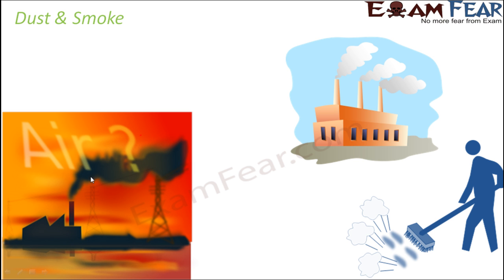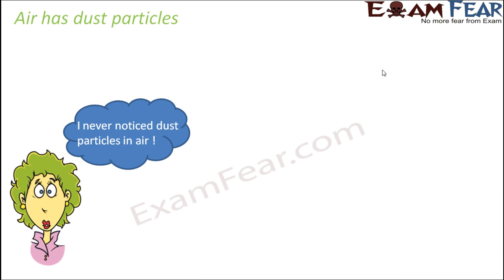So where do you think this black smoke coming out of the chimney would go? It will go to the air, of course. Similarly, these smokes emitted from different types of industries and factories, plus the dust which comes out of the streets and houses everywhere — they all end up going to the air, and therefore air has dust and smoke.